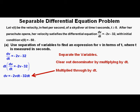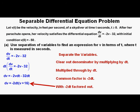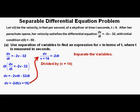We look for a common factor between these two terms, which is negative 2 dt. Here's the equation with negative 2 dt factored out: dv equals negative 2 dt times the quantity v plus 16. Next, dividing by the quantity v plus 16, we have dv over (v plus 16) equals negative 2 dt.